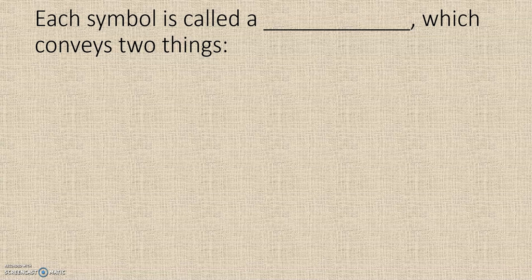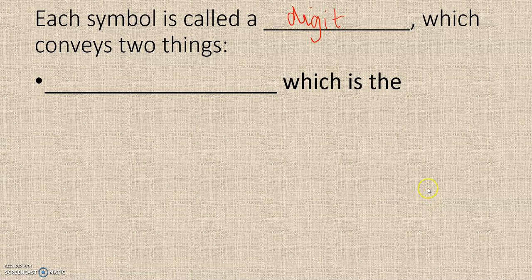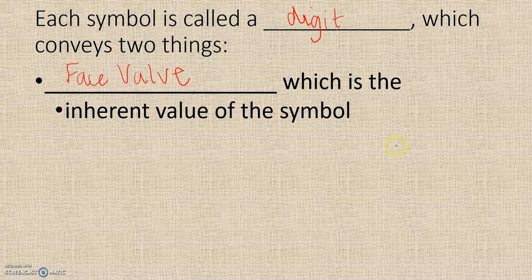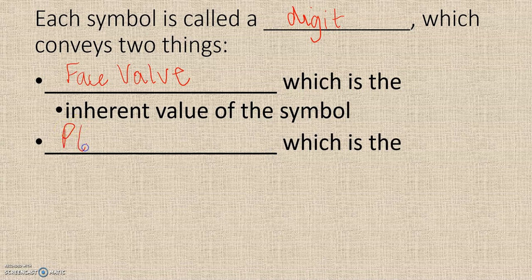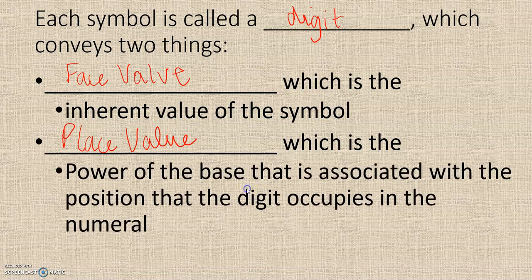Each symbol is called a digit, which conveys two things: face value, which is the inherent value of the symbol, and place value, which is the power of the base that is associated with the position that the digit occupies in the numeral.